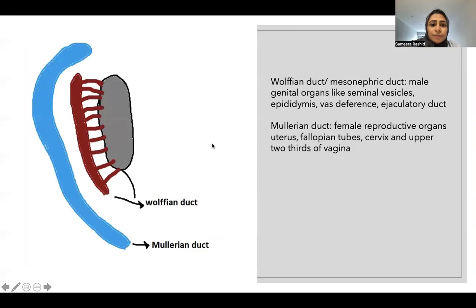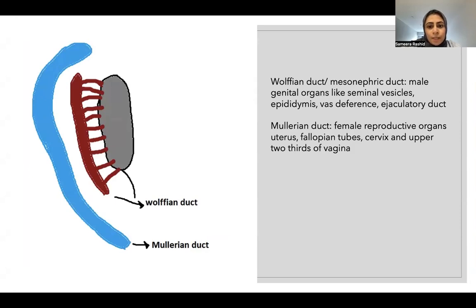At around six weeks of gestation in the developing human, there is development of the Wolfian or mesonephric duct, and parallel to it is the Mullerian duct. The Wolfian duct gives rise to male genital organs like seminal vesicles, epididymis, vas deferens, and ejaculatory duct. The Mullerian duct is what the female reproductive organs originate from — the uterus, fallopian tubes, cervix, and upper two-thirds of the vagina.